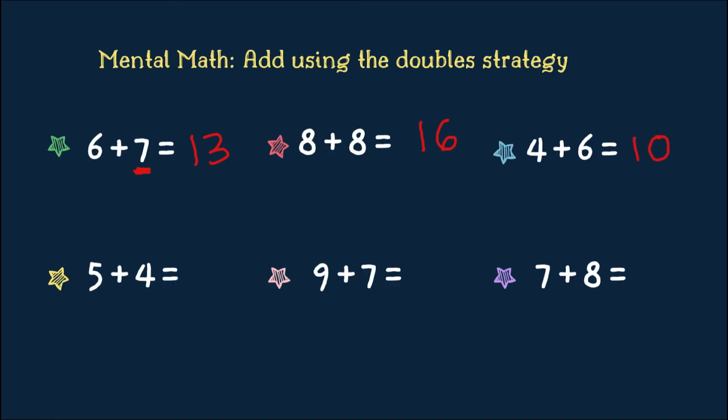Next one. 5 plus 4. Look at your smaller number. The 4. So, 4 plus 4 is 8. 5 is one more. 8 plus 1 equals 9.